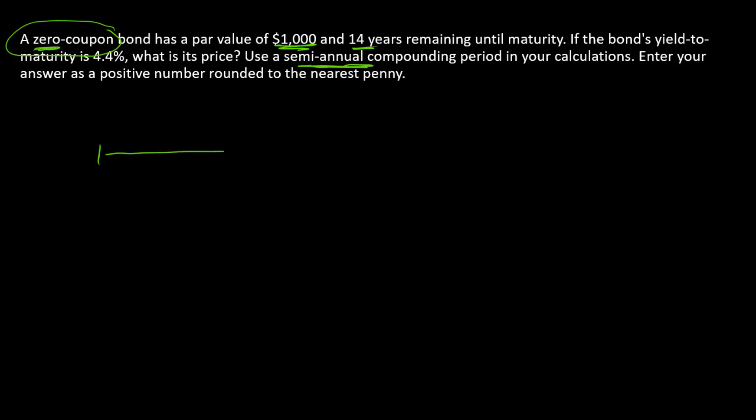And so what does that mean? It means we have 28 semiannual ticks on the timeline. The only cash flow is the $1,000 repayment at time 28.